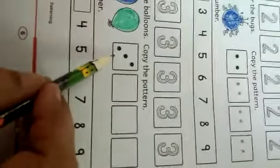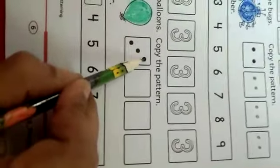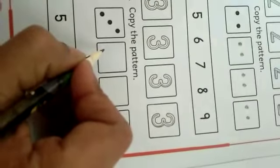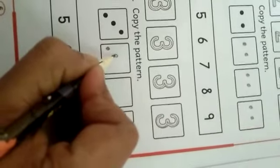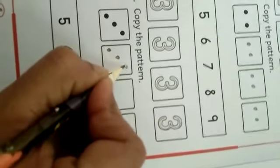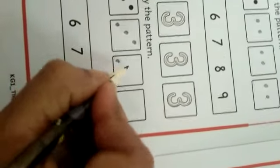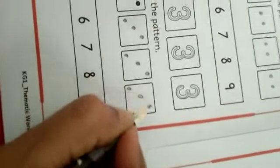So now what will we do? Copy the pattern. So how many dots in a single box? One, two and three. So now we will copy this pattern in these boxes. So how will we copy? One, two and three. One, two, three. One, two, three. Done.